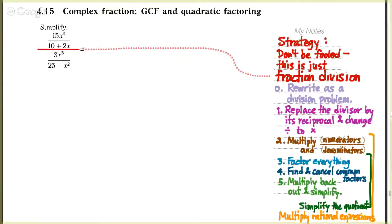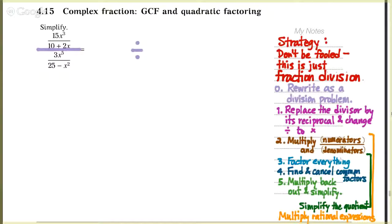So let's get started on this complex fraction, whose numerator is 15x cubed over 10 plus 2x, and whose denominator is 3x to the fifth over 25 minus x squared. How are we going to do it? Well, let's trade out that gigantic fraction bar for a division sign.